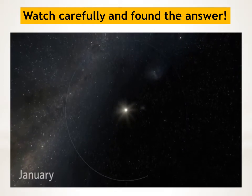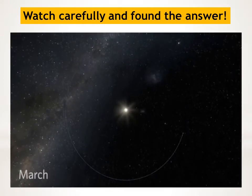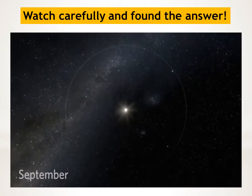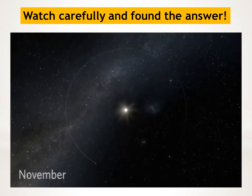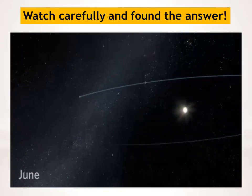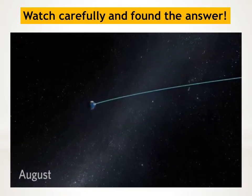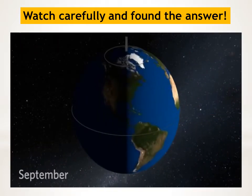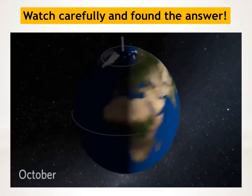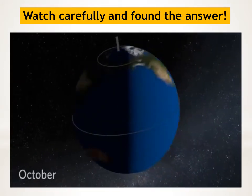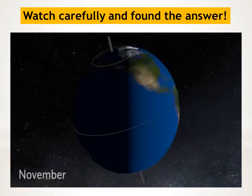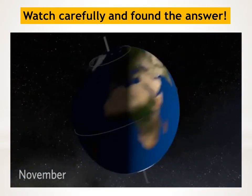You know that earth orbits the Sun, and that it takes a full year for our planet to complete its orbit. Earth also rotates like a slightly tilted spinning top. Earth remains tilted in the same direction all year round as we orbit the Sun, but that means the Sun's light shines differently on earth at different times of the year.